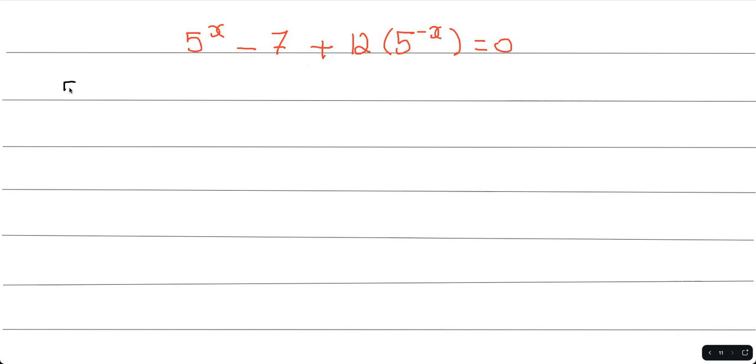To be able to do this, I'm going to write this as 5 to the power of x minus 7 plus 12. I'm going to bring the 5 to the power of negative x to the bottom, so I'm able to change the exponent to positive.